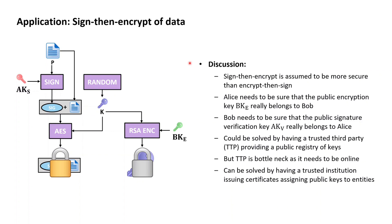A second approach to providing authenticity to the keys used in a system can be provided by a trusted institution issuing certificates with a certain lifetime, and with these certificates assigning public keys to entities like Alice and Bob. A trusted institution like this is essentially exactly what X.509 PKIs are set out to be, and we are just about to get to know how X.509 PKIs work and how they manage to provide authenticity to the cryptographic public keys used to secure digital information systems.